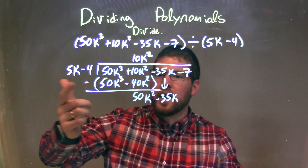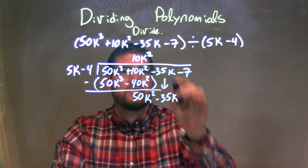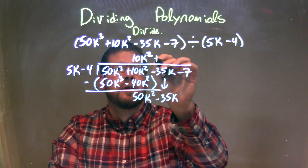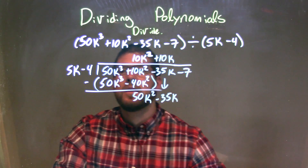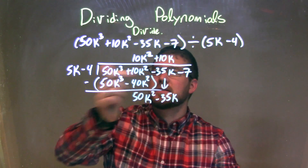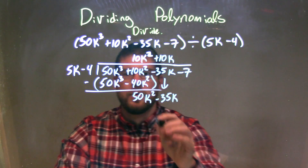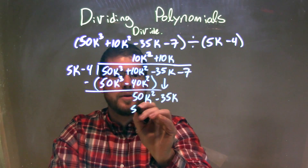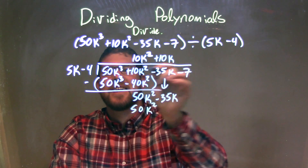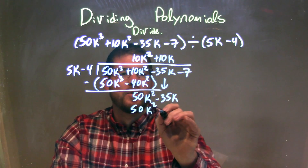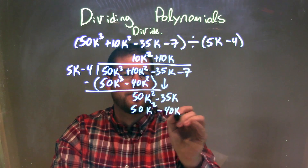Same thing again. What times 5k gives me 50k²? And that's just 10k. So 10k right there. 10k times 5k is 50k², which it should be — that's the whole goal of it. 10k times the minus 4 is minus 40k.